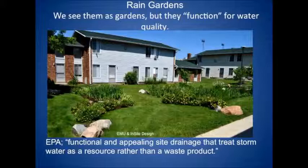Rain gardens look like just gardens, but they are actually highly functional for the purpose of improving water quality. Even the EPA recognizes this — they say good site drainage treats water as a resource rather than a toxic material or waste.